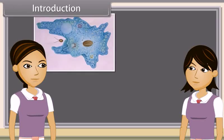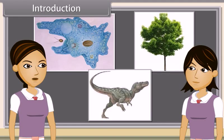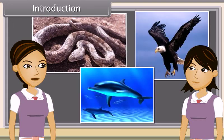Can you name this organism? Yeah, this is amoeba. Name these organisms as well. The first one is a tree and the second a dinosaur. Identify these creatures. Snake, eagle and dolphins.